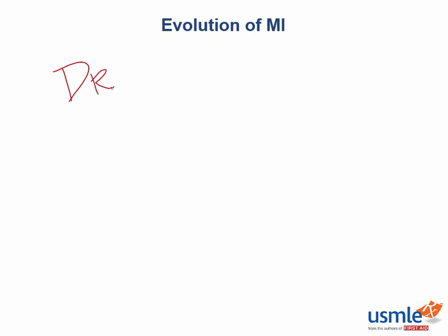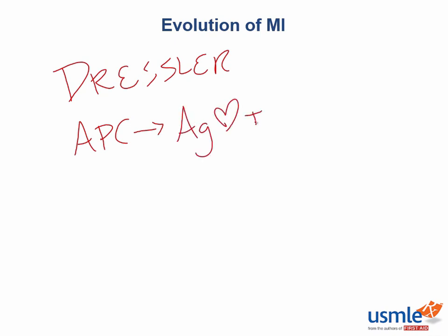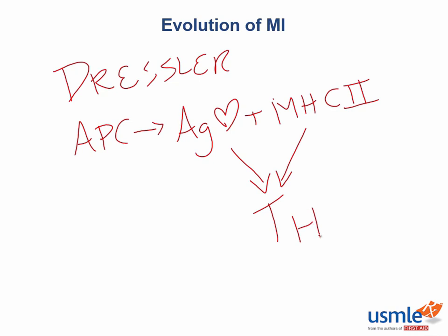A key complication in this time period is Dressler syndrome. When macrophages phagocytose the necrotic cardiac tissue, they can take a cardiac antigen, present it on MHC class II, and communicate with a helper T cell — activating the immune system against the heart itself. This is the whole concept behind Dressler syndrome.